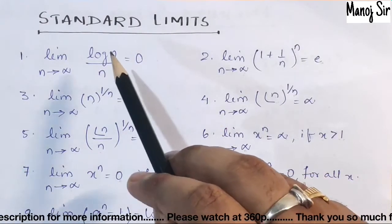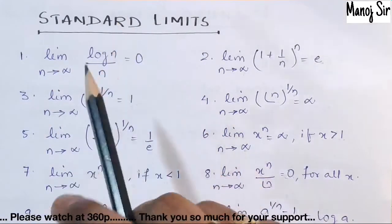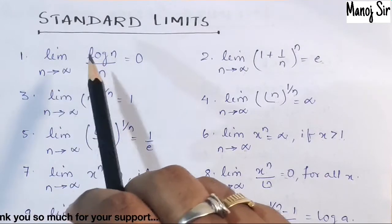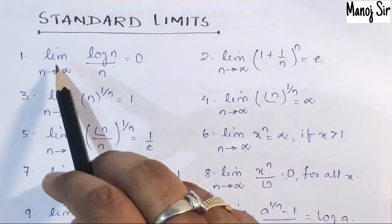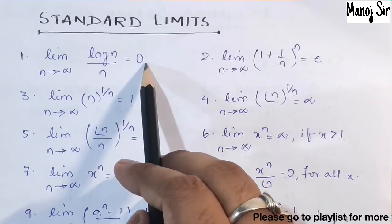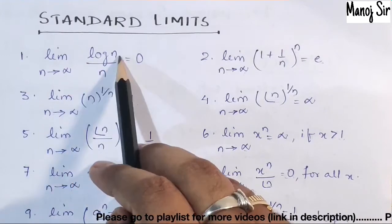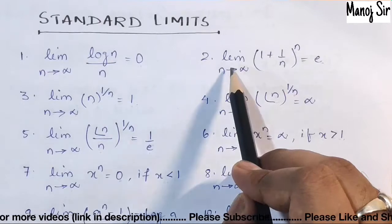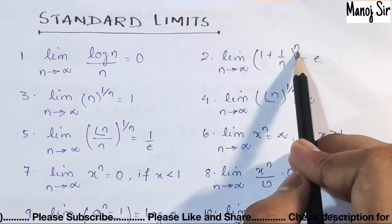Let us start with various standard limits. First standard limit: limit n tends to infinity of log(n)/n is always zero. I repeat — limit n tends to infinity of log(n)/n is always zero.